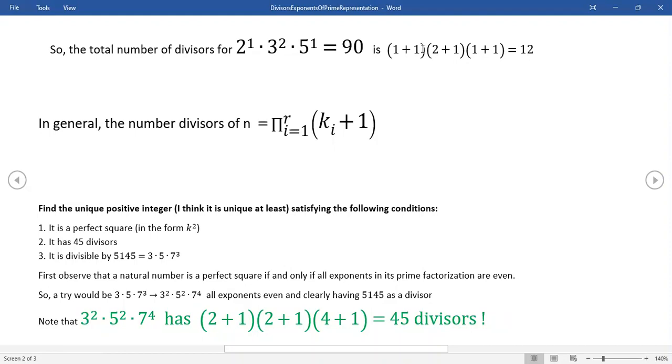I mean, we physically saw the 12 divisors, but this is the so-called easy way to do it. Just take the exponents in the prime factorization and increment by one and multiply that product together. Now, this is the product notation for that result.